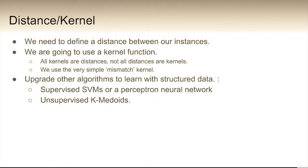How we're going to do this is we're going to use a kernel or a distance function between our instances. So we're going to use a kernel function and all kernels are distances, but not all distances are kernels. And we're going to just use a very simple mismatch kernel. Now, why we're using a kernel function rather than a distance function is that hopefully that will then make it clear how you could upgrade other algorithms, such as a support vector machine or a perceptual neural network to work with structured data.